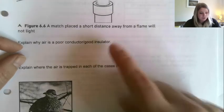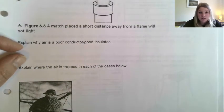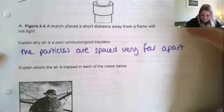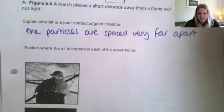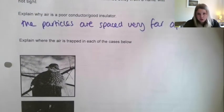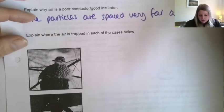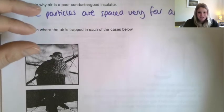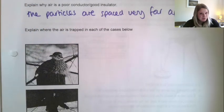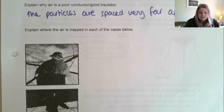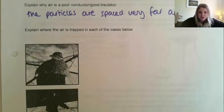So all we're writing here is: explain why air is a poor conductor or a good insulator - it's because the particles are spaced very far apart. If we look at the diagrams here, we have to think about where the trapped air is. In winter you'll see birds ruffling their feathers a lot. What they're doing is trapping air in between their feathers because it's going to help them stay insulated and stay warm, since air is such a poor conductor.